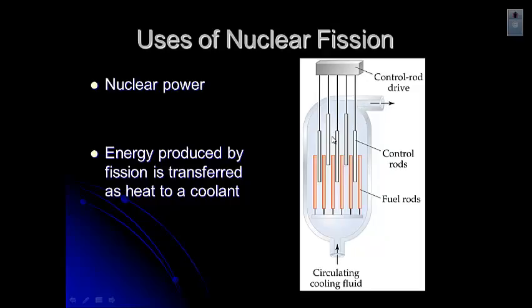Those rods can be dropped down between the fuel rods and they'll absorb those neutrons to keep them from transferring from one fuel rod to another. When that coolant is heated as the reaction goes on, you can use that hot coolant like a coal flame in a coal plant to boil water. That generates steam to turn a turbine.